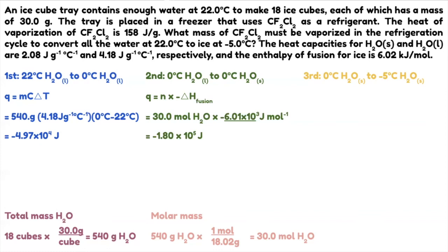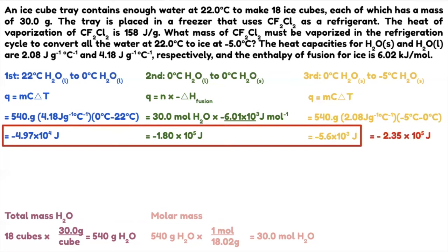Step three is another slope: 0 degree solid water to negative 5 degrees. Using Q = mCAT: 540 grams times 2.08 joules per gram degree Celsius times (negative 5 minus 0 degrees Celsius), giving negative 5.6 times 10 to the 3rd joules. For Q total — Q1 plus Q2 plus Q3 — the sum is negative 2.35 times 10 to the 5th power joules.